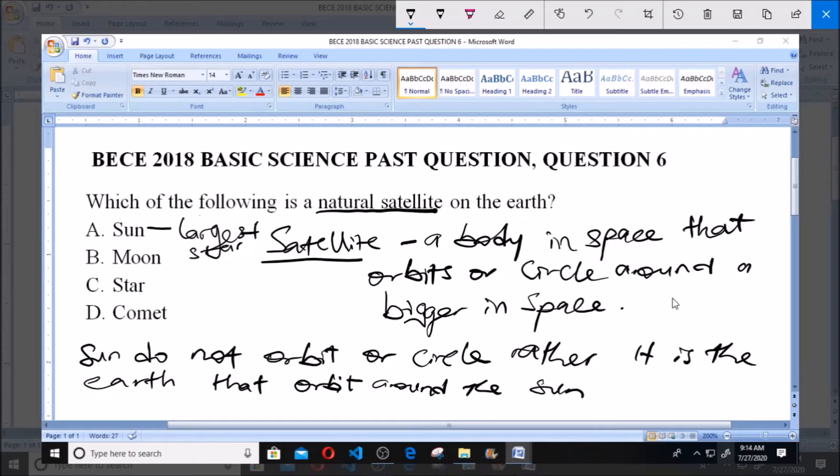So the sun does not orbit. So definitely sun cannot be the satellite of the earth.